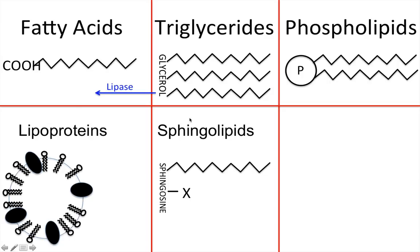These are the structures of some of these molecules. The fatty acid is a carboxylic acid with a long hydrocarbon chain. The triglyceride is basically three fatty acids connected to a glycerol backbone. Here I have an arrow showing that if you take a TAG and attack it with a lipase, it'll turn back into a fatty acid — the lipase basically cuts the fatty acid chains off.